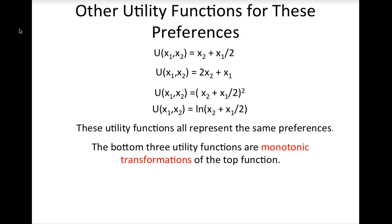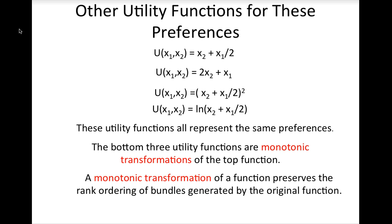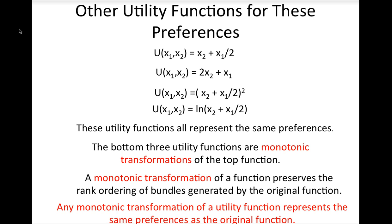As long as the utility function generates indifference curves that are straight lines with a slope of negative one-half, it is an accurate representation of these preferences. The bottom functions are monotonic transformations of the original utility function. A function is a monotonic transformation if the rank ordering of bundles is the same after the transformation. Any monotonic transformation of a function represents the same preferences as the original function.